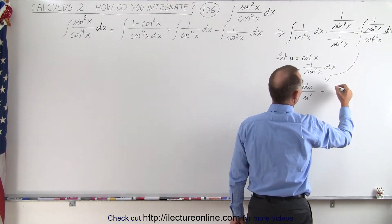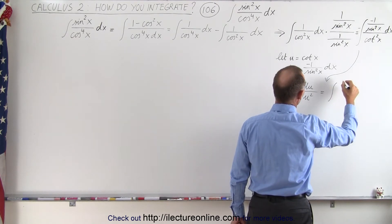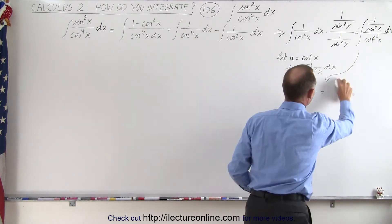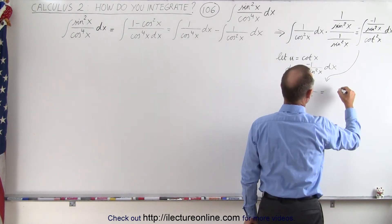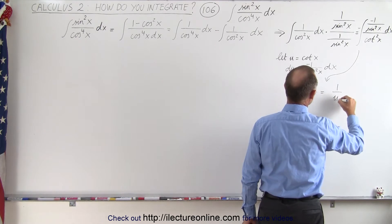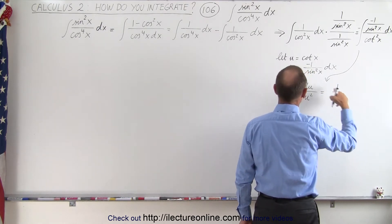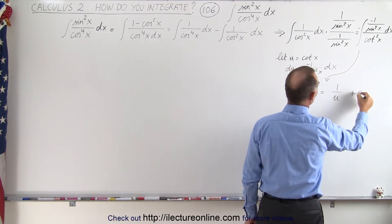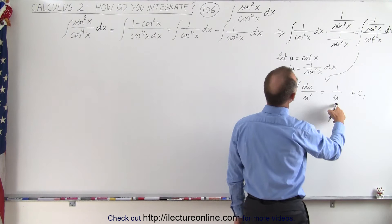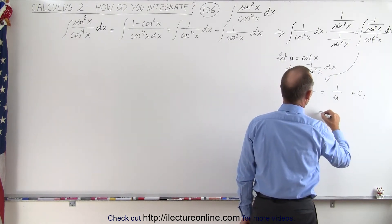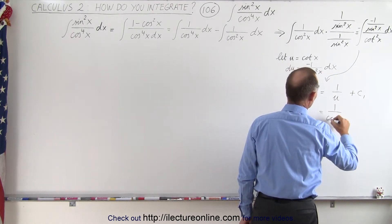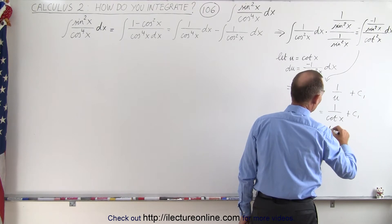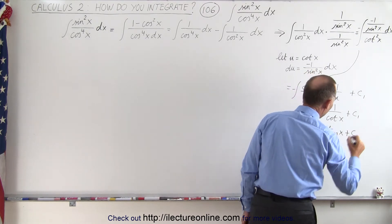That's fairly easy to integrate. It becomes equal to 1 over u divided by negative 1, and the two negative signs cancel out, giving us plus 1 over u plus a constant of integration. Since u was equal to the cotangent of x, this becomes 1 over cotangent of x, or simply the tangent of x plus the constant of integration.